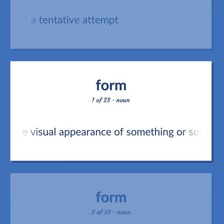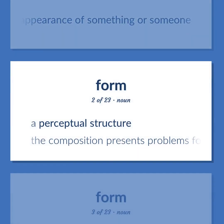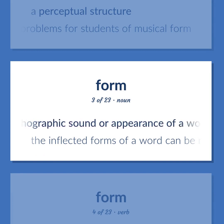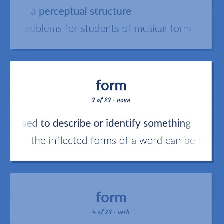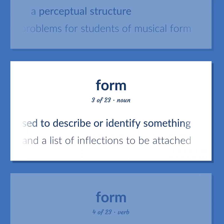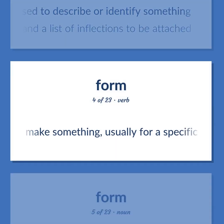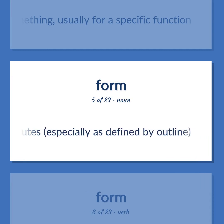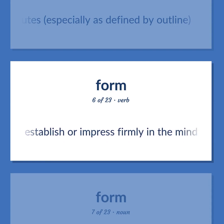Form. The visual appearance of something or someone. A perceptual structure — the composition presents problems for students of musical form. The phonological or orthographic sound or appearance of a word that can be used to describe or identify something. The inflected forms of a word can be represented by a stem in a list of inflections to be attached. Make something, usually for a specific function. Any spatial attributes, especially as defined by outline. Establish or impress firmly in the mind.